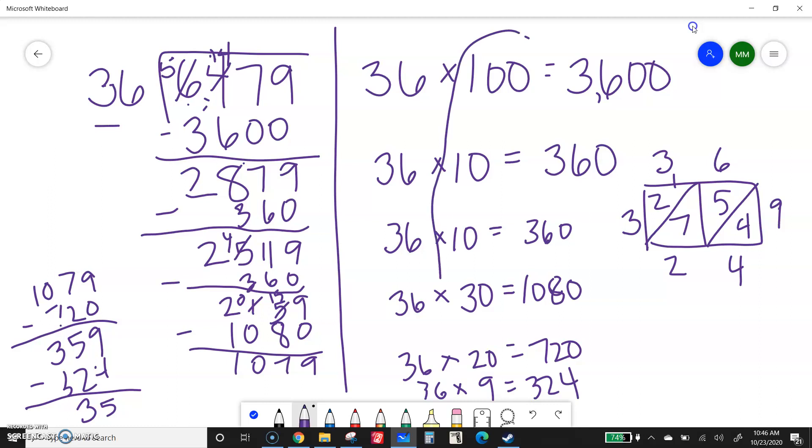So now I have to figure out how many groups we did or how many I put in each group. So 100, 10, 20 plus 30 is 50. 60, 70. So 179. Remainder 35 is my answer for that one.